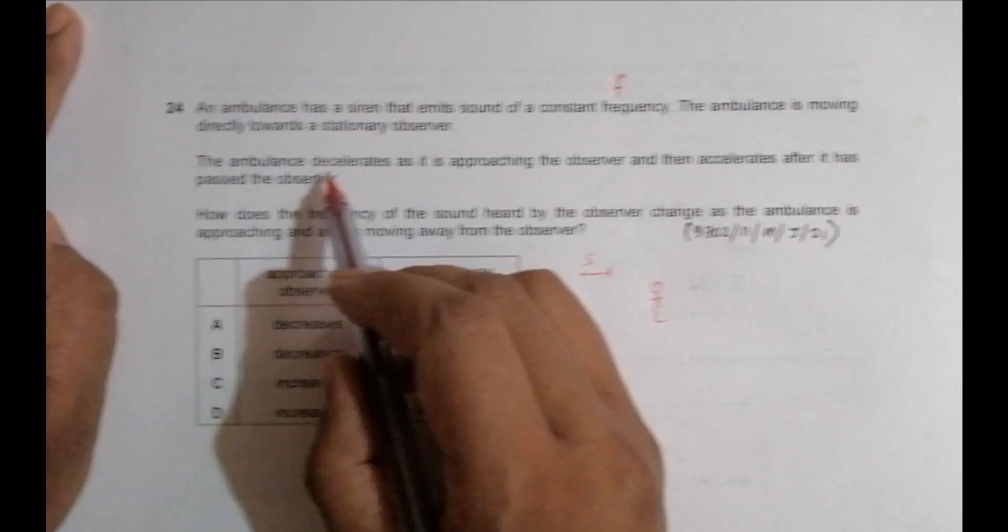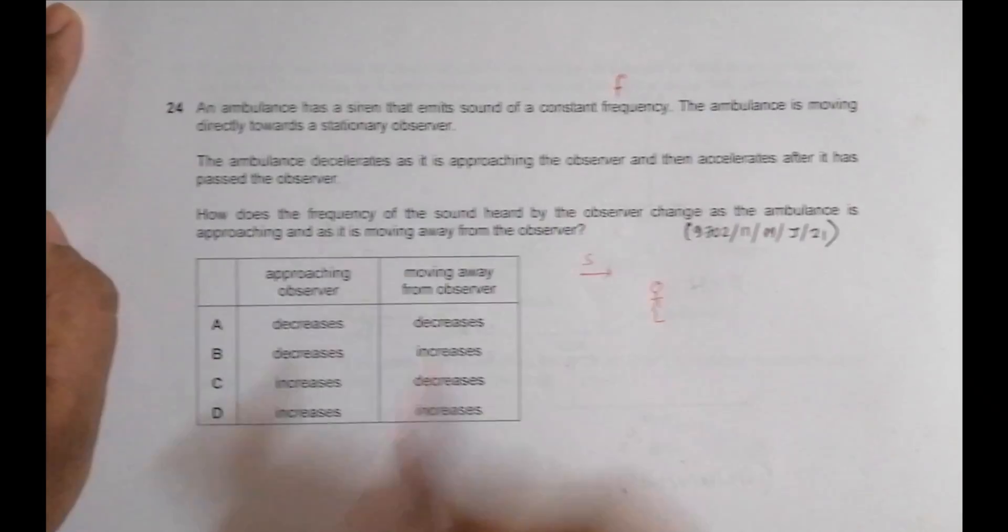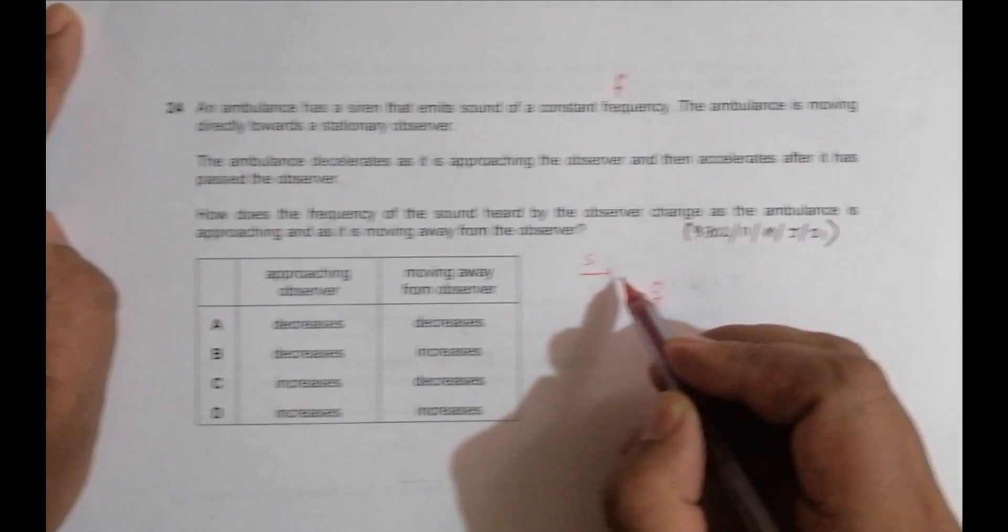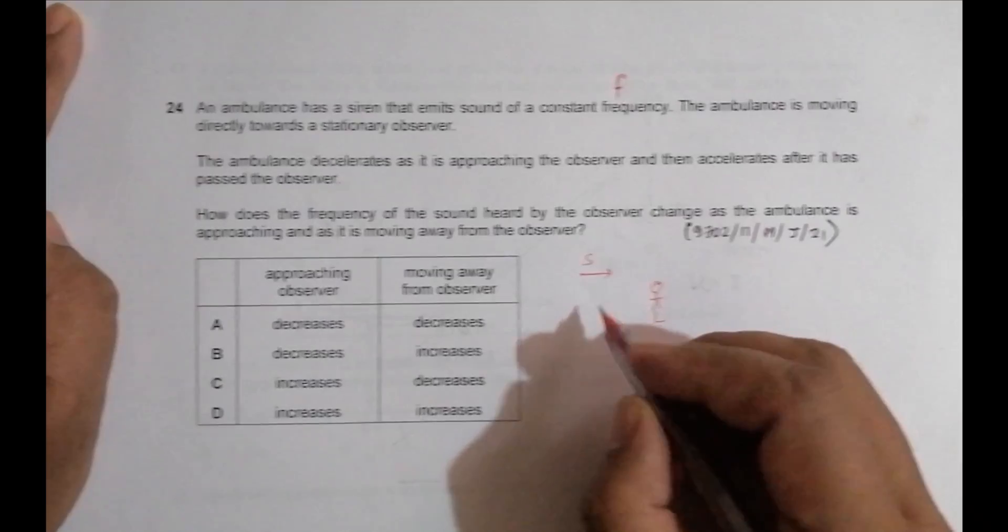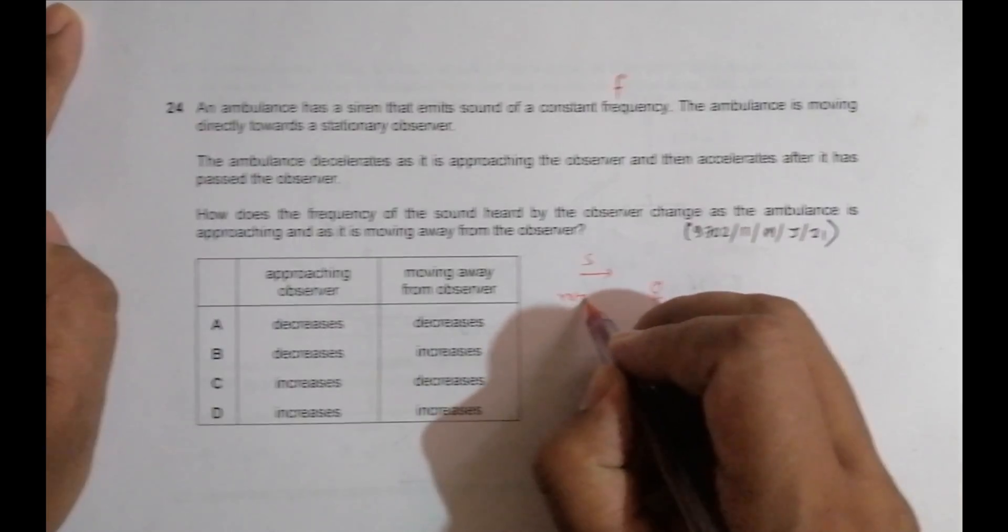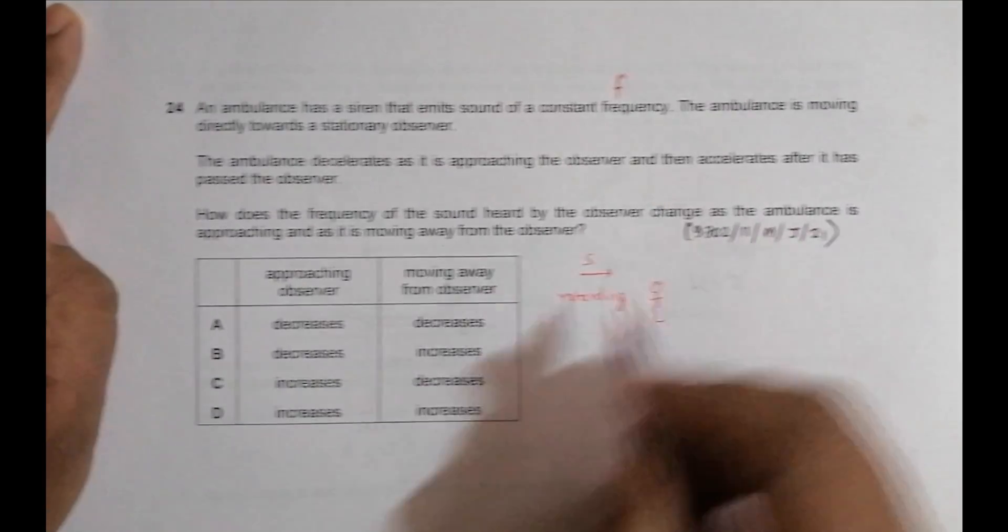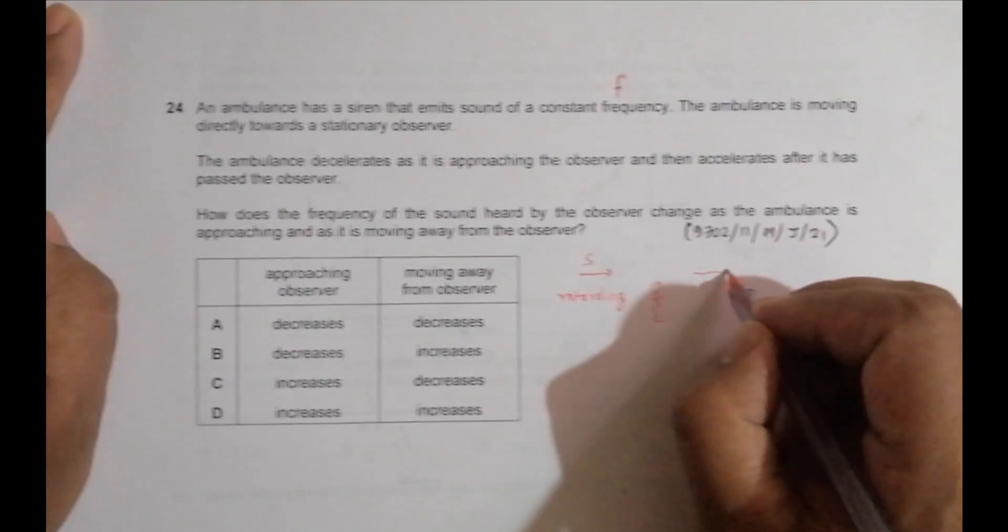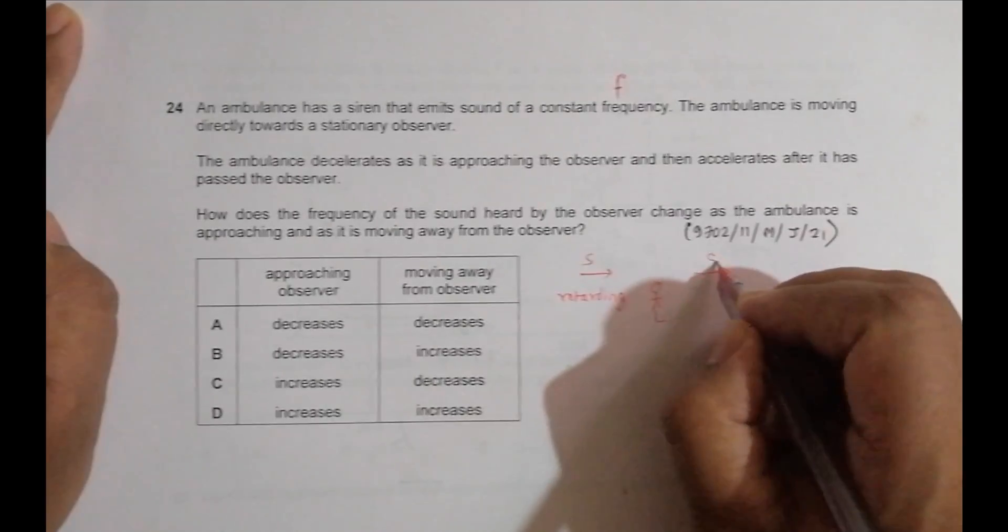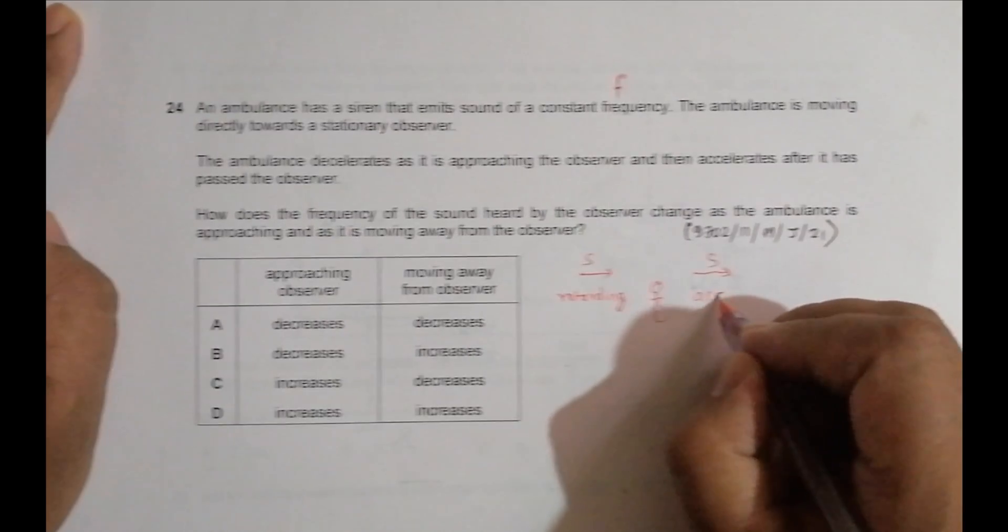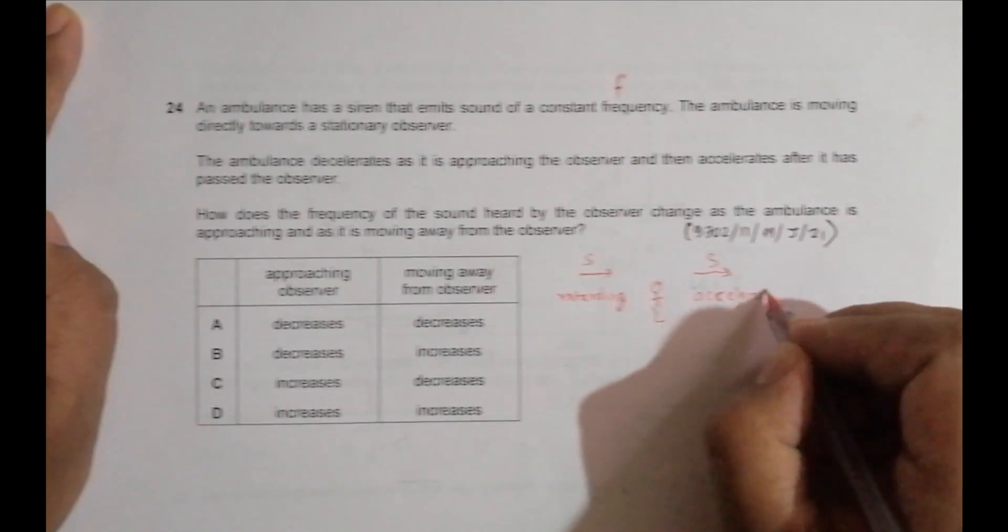So the ambulance decelerates as it is approaching the observer. So when it is coming here, it is retarding or decelerating. So let us say it is retarding here. And then accelerates after it has passed. So after passing here, after passing it accelerates. So it is accelerating here.